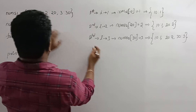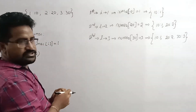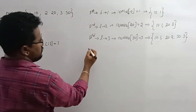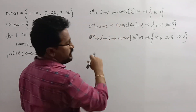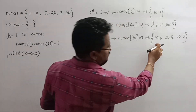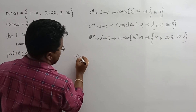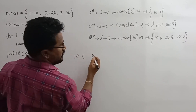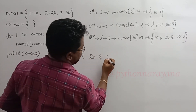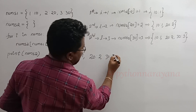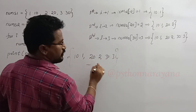Now, the fourth time there is no iteration because we have only three pairs. That means there is no fourth iteration. Finally, at the end of the program, the result of the dictionary is: {10: 1, 20: 2, 30: 3}. This is the result of the program.